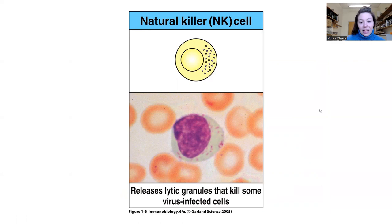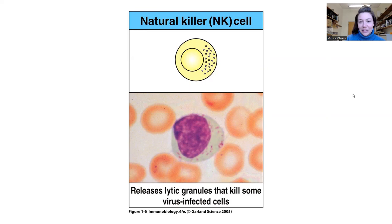Lastly, we have the natural killer cell. Do you remember which pathway they come from — myeloid or lymphoid? They're one of the three that comes from the lymphoid progenitor cells. So remember, it's just B cells, T cells, and natural killer cells. Everything else comes from the myeloid lineage. They primarily kill tumor cells and virally infected cells.